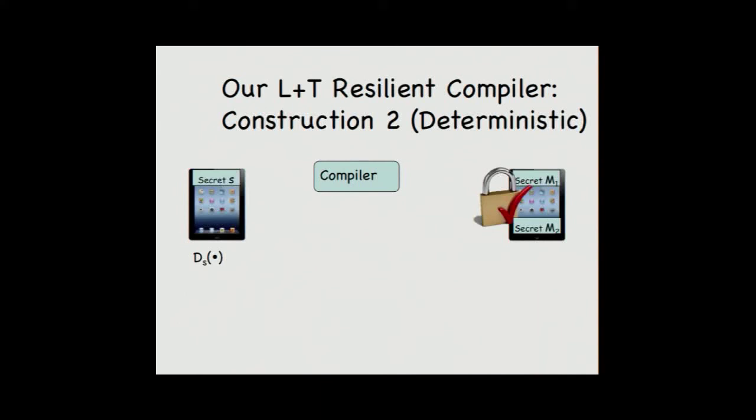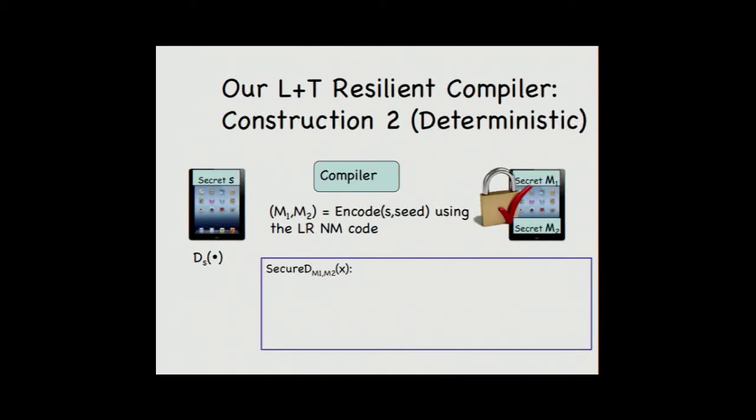In the second construction, we show how to de-randomize the previous one. Instead of storing the encoding of your secret, you store additionally a seed. And the device in the right-hand side first decodes, and then it plugs in with a PRG with the seed. And now we have a lot of randomness, and then we can refresh the encoding with a new seed prime using the random coin. And then we output D as D on input X. Here in our full version of the paper, we show it's secure, and we don't have trouble with circular security.